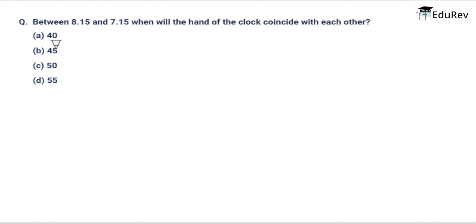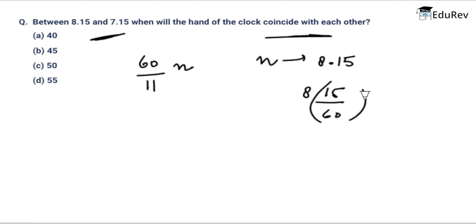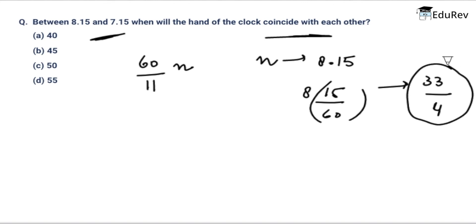The next question asks: between 8:15 and 9:15, when will the hands of the clock coincide? The formula to solve this is (60/11) × n, where n corresponds to 8:15, which equals 33/4. So (60/11) × (33/4) = 45. The correct answer is 45 minutes.